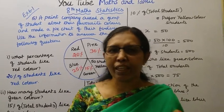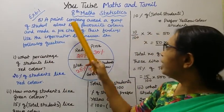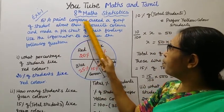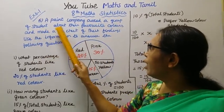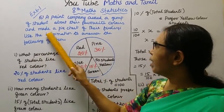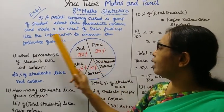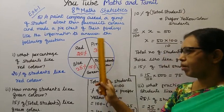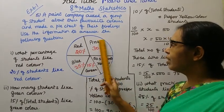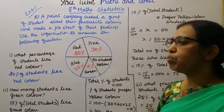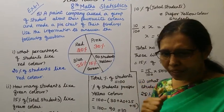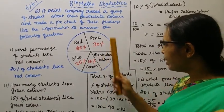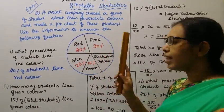Hello students, welcome to Mags and Tamil channel. This is tenor max statistics exercise 6.1, fifth question. A paint company asked a group of students about their favorite colors and made a pie chart of their findings. Use the information to answer the following questions. The pie chart shows the percentage.